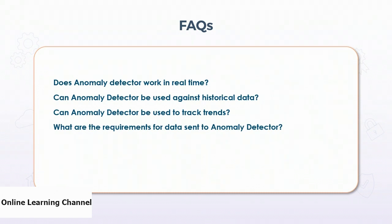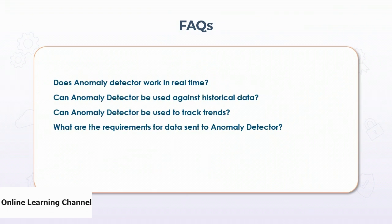Data sent to Anomaly Detector accepts data in JSON request objects and can be any numerical data in a sequence. At minimum you can send 12 data points, with a maximum of 8,640. If there is no clear pattern, there should be at least four occurring patterns, and no more than 10% of numerical points should be missing.